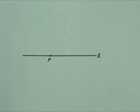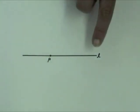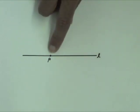In this video, we will use a compass and a straightedge to construct a perpendicular to a given line at a given point. Here is a line L and a point P on the line.